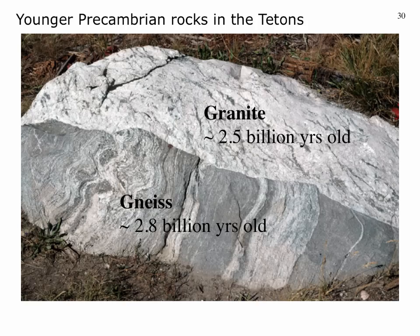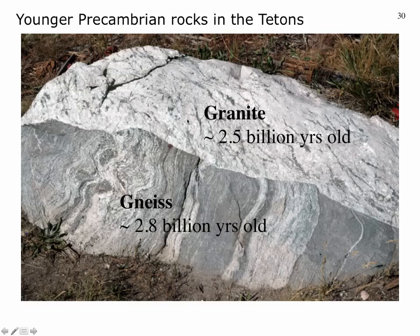There are also somewhat younger rock types in the Tetons. You can see gneiss with its light and dark banding — some of these gneisses are as old as 2.8 billion years — but then at a sharp contact, another rock type cuts across it: granite. This granite is 300 million years younger than the gneiss, at about 2.5 billion years old. Where one rock cuts across another like this, it can indicate injection of magma into a crack that cooled to form an intrusion. There's a whole suite of Precambrian granite rocks in the Tetons as well.